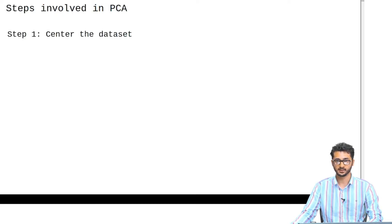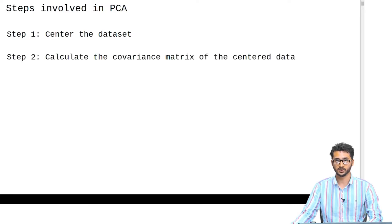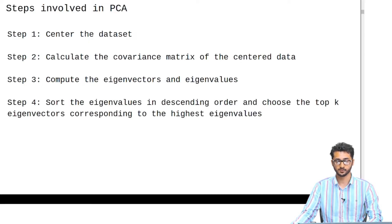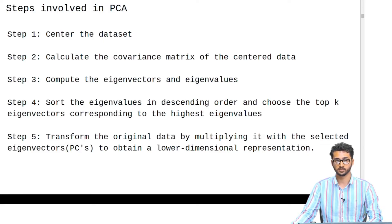The first step is to center the dataset and then calculate the covariance matrix of this centered data. Then compute the eigenvectors and eigenvalues of this covariance matrix. Depending on the dimension in which we want to project our data, we sort our eigenvalues in descending order and select the top k eigenvectors. Once we have selected our eigenvectors, we project the centered dataset on those eigenvectors and get our representation.